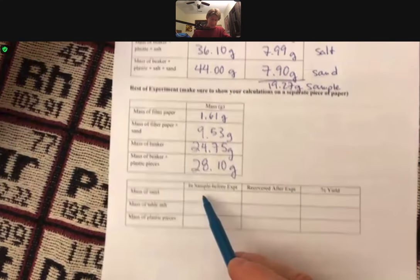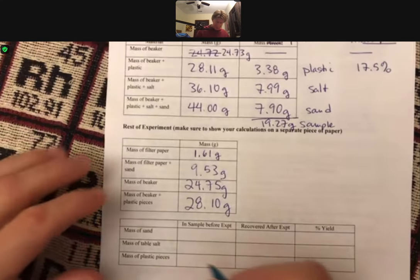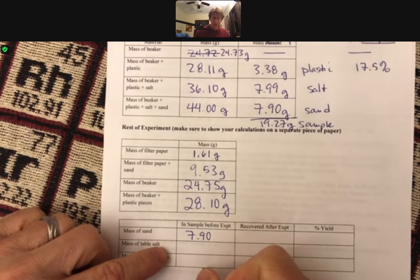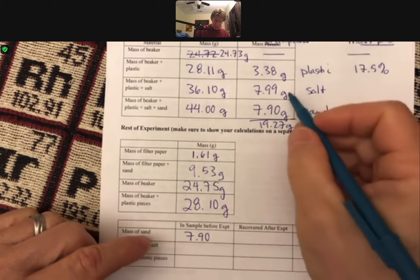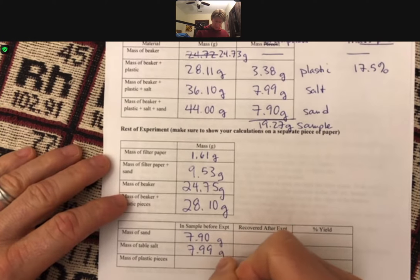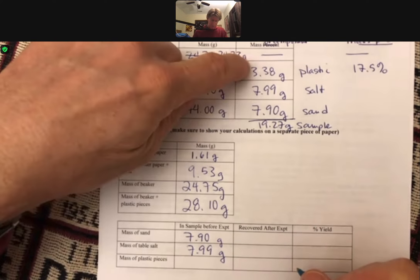Now let's fill in this table down here. So in sample before experiment, I've got my sand, which was 7.90. I've got my table salt, which is 7.99. And those are grams. And I've got my mass of plastic pieces, which was 3.38.